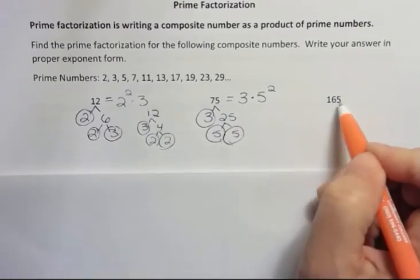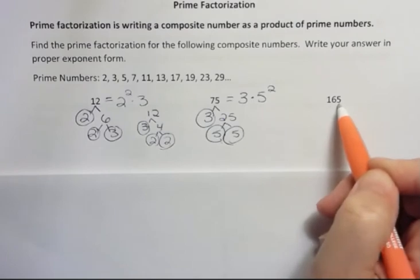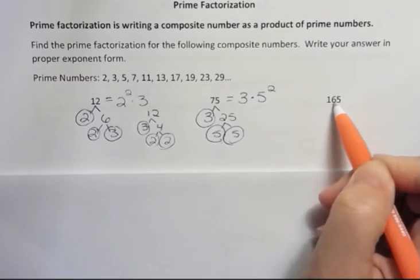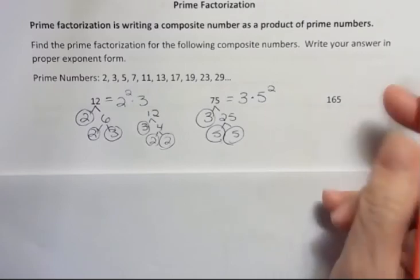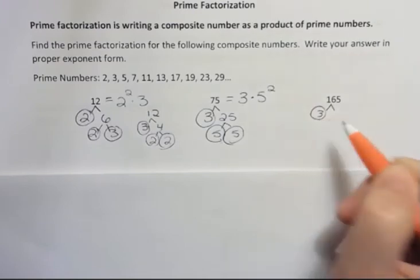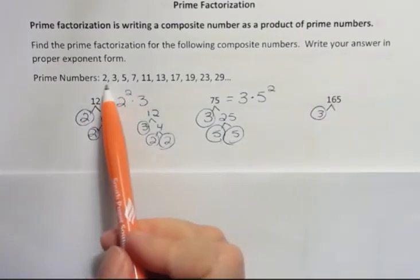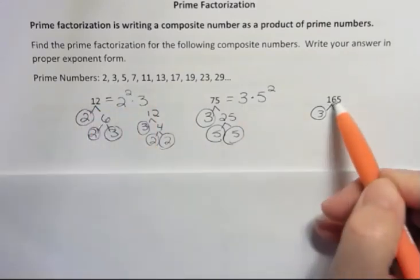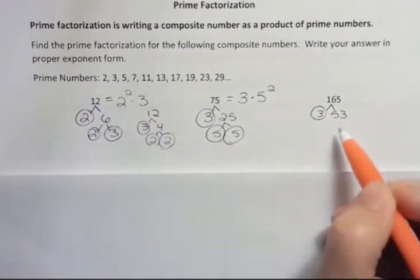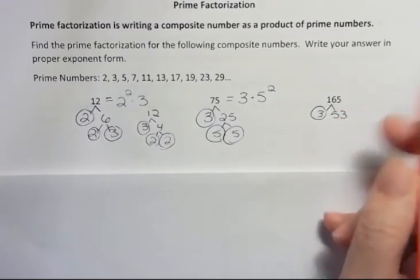What about 165? Well, 2 doesn't go because it's not even. And 3 goes into, well, I can add these up. 5 and 6 is 11 plus 1 is 12. So I know that 3 will go. I could also start with 5 here, but I'm just going to stick with my method, which is use the smallest one first and keep going. 3 goes into 165 times. I think that's 53, 150, yeah.